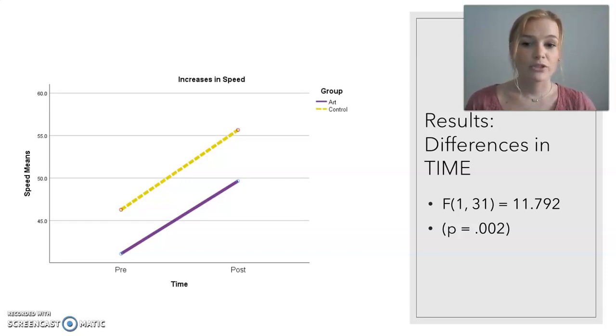So I specifically saw a statistically significant difference in my increases of mean speed. So as you can see in this graph, my experimental group, which is shown by the purple line, there was a significant increase in their speed means between pre and post.